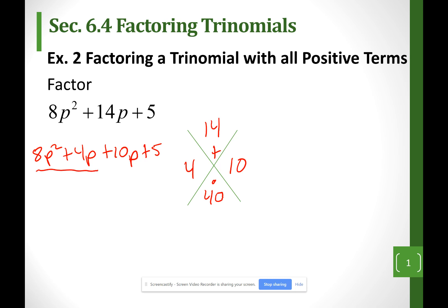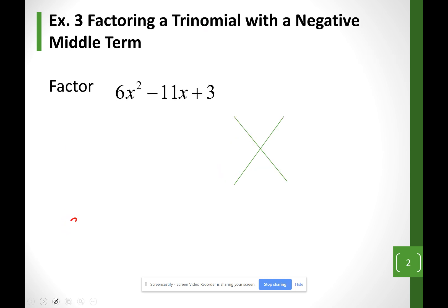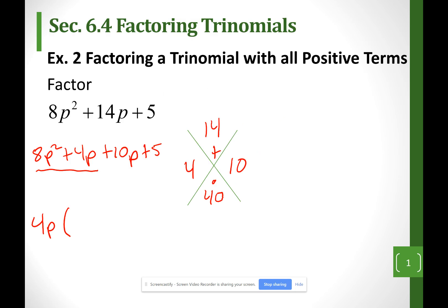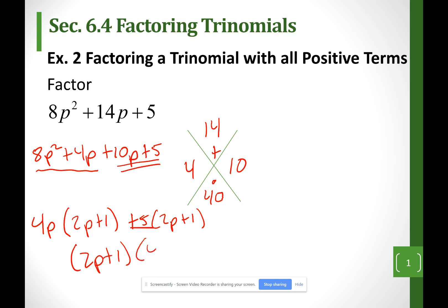Looking at the first two terms, I can divide both by 4p. If I factor out 4p out of each, I'm going to have 2p plus 1. If I look at my last two terms, let me factor a 5 out, and I'm also going to have 2p plus 1. So my answer will end up being (2p + 1)(4p + 5).